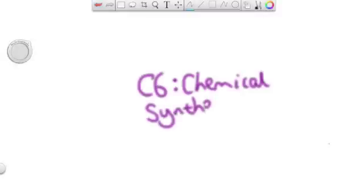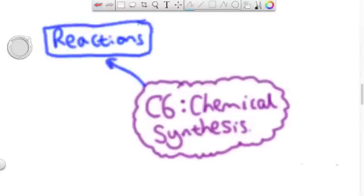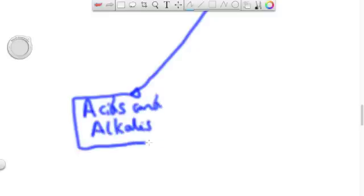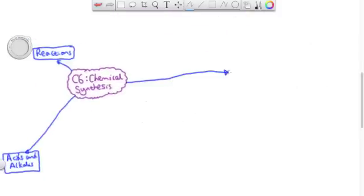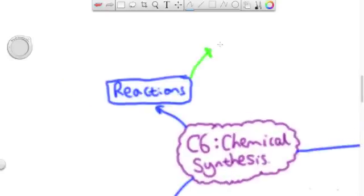Welcome to C6 Chemical Synthesis. In this video we'll look at three strands: the first one is reactions, the second one is acids and alkalis, and the third one is chemical synthesis which is the title of the module.